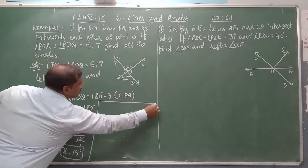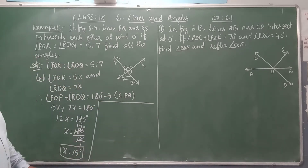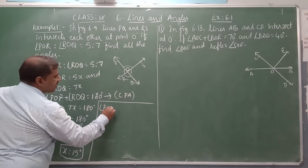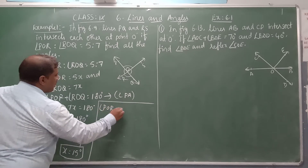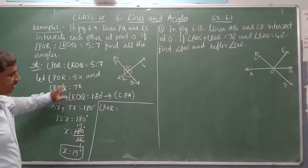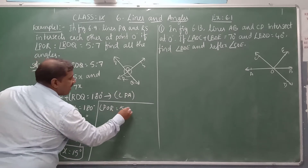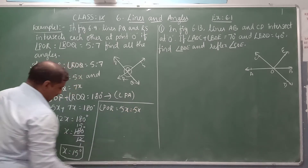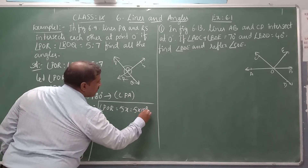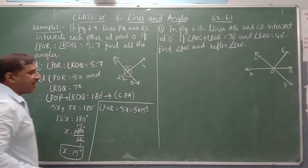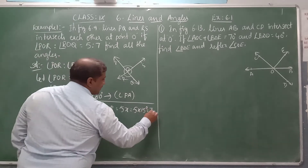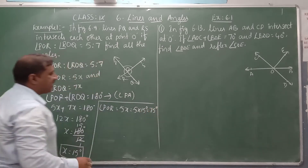Now what we have to find are all angles. Angle POR equals 5X, that is 5 into 15 degrees, which gives us 75 degrees.